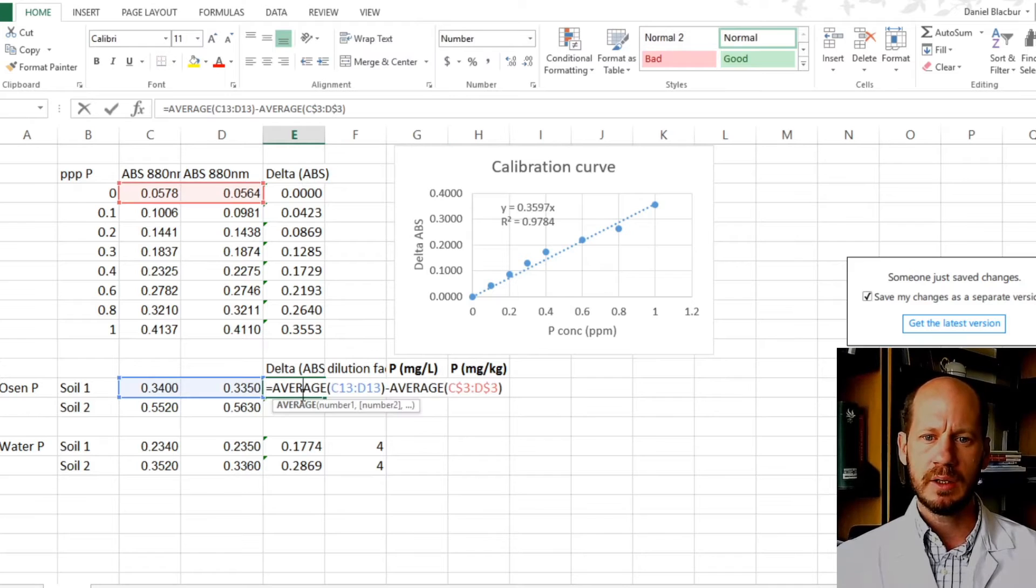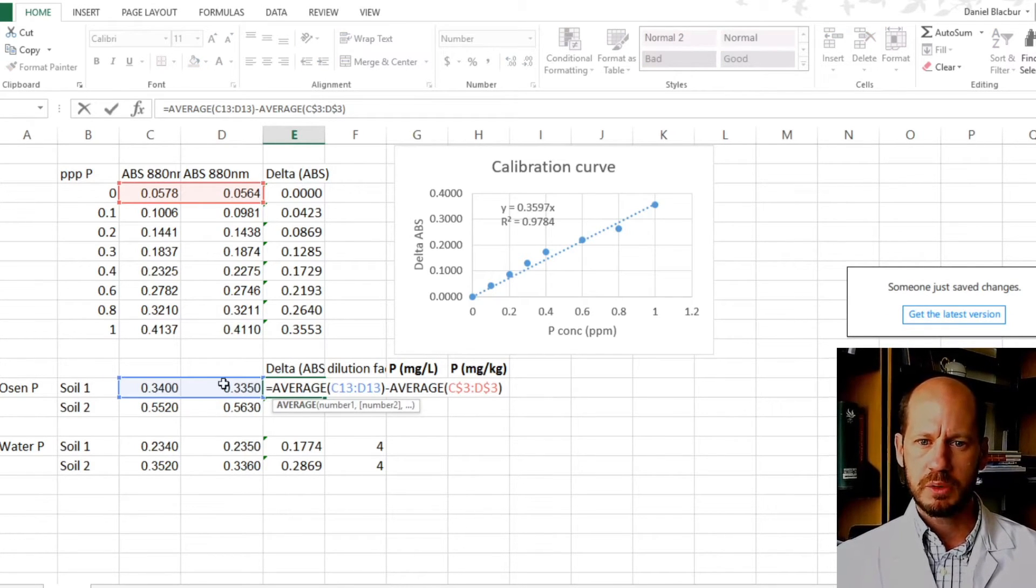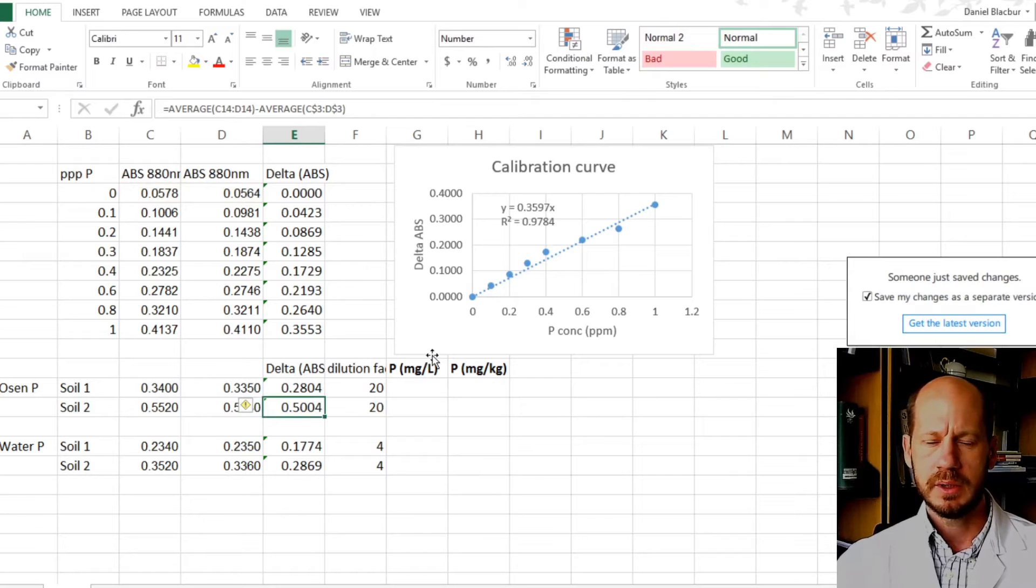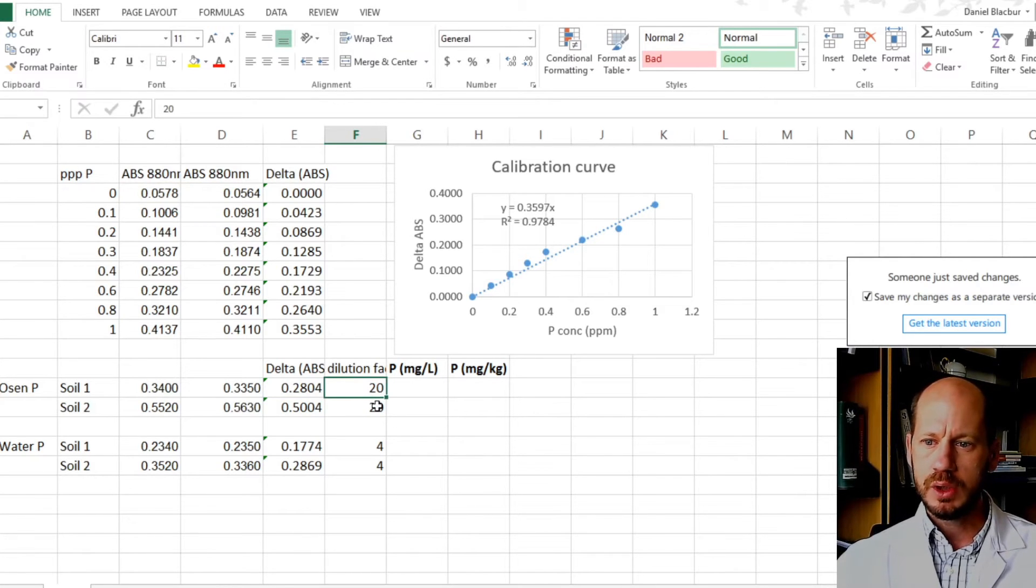Here I have calculated the delta absorbance, which is just the absorbance you measure at your sample minus the absorbance of the zero, which has no phosphorus, and then you subtract one by the other. The next thing you will need for this calculation is the dilution factor, which means how many ml of the extractant or water do you add per gram of soil. Here it's 20 to 1, and for water it's 4 to 1.